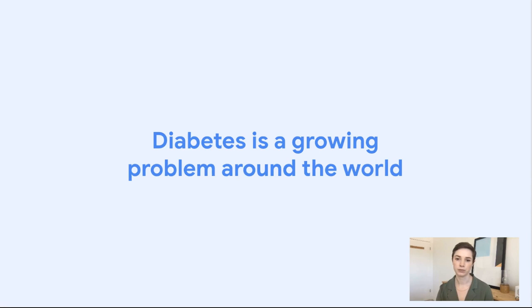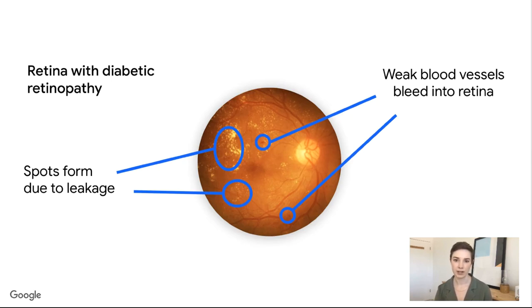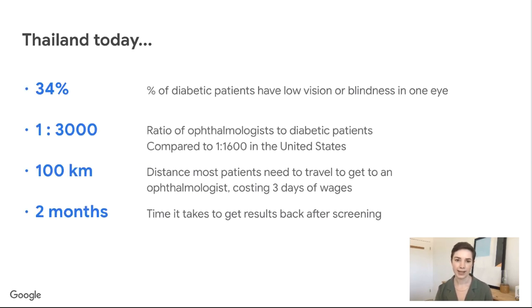Diabetes is a growing problem around the world, and with diabetes comes complications, including diabetic retinopathy, which we refer to as DR. DR is a condition caused by chronically high blood sugar that damages blood vessels in the retina, the thin layer at the back of the eye responsible for sensing light and sending signals to the brain. These blood vessels can leak or hemorrhage, causing vision distortion or loss. DR is one of the leading causes of vision impairment in the world and causes 5% of cases of blindness worldwide, excluding refractive errors. In Thailand in particular, 34% of diabetic patients have low vision or blindness in one eye, and there is a problem of access to care. There is a shortage of specialists that are hard to get to, and it takes a long time for a patient to get the results back from their eye screening.